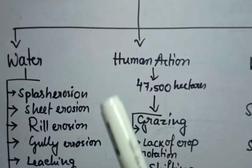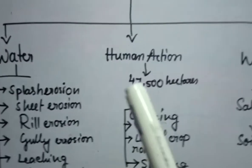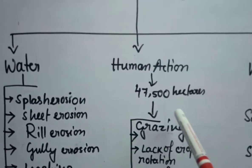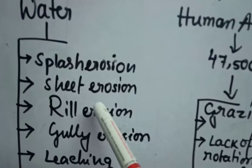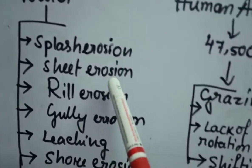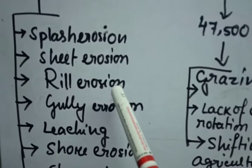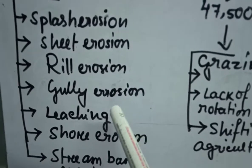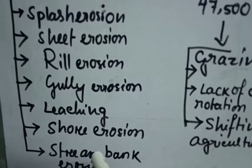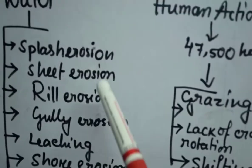But what are the main types and how the soils are eroding you can see here. First, I will talk about water. You can see here some points I have given. Splash erosion, sheet erosion, rill erosion, gully erosion, leaching, shore erosion and stream bank erosion. So what are these? First we have to know.